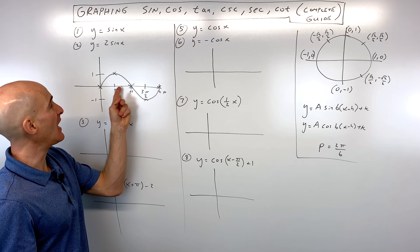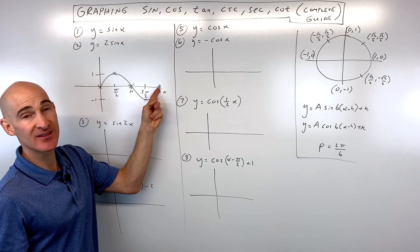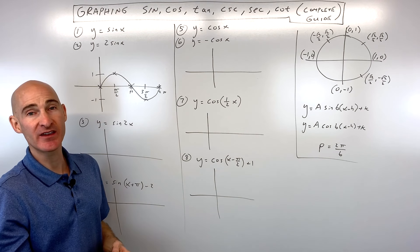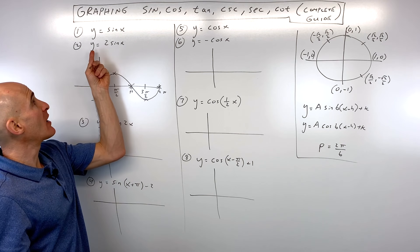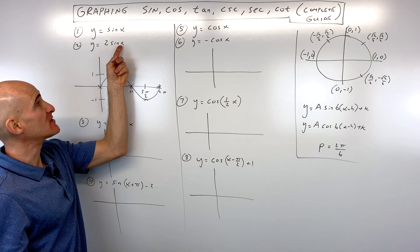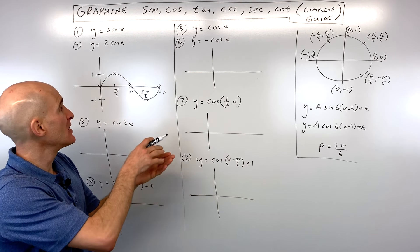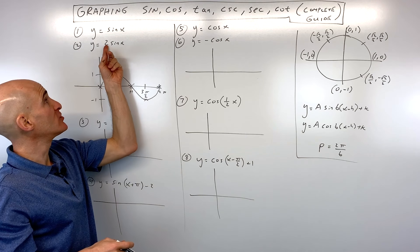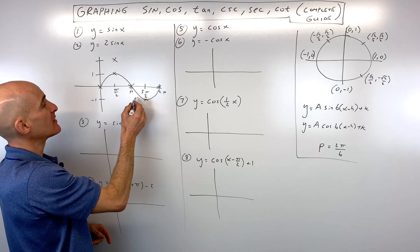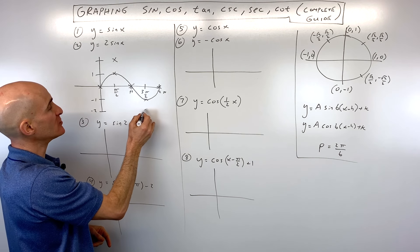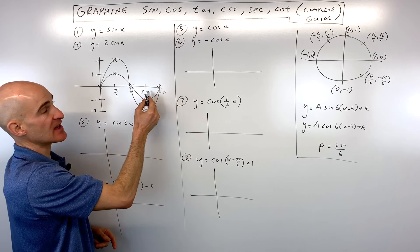Think of it as starting at the midline — it goes up to the maximum, back to the midline, down to the minimum, and then back to the midline, and then it starts over and keeps repeating. You've got a maximum at one and a minimum at negative one. Now what happens if you wanted to graph y equals two times sine of x? This number in front is what we call our amplitude a, and that's going to be a vertical stretch of two. Instead of going up to one you'll go up to two, and down to negative two.